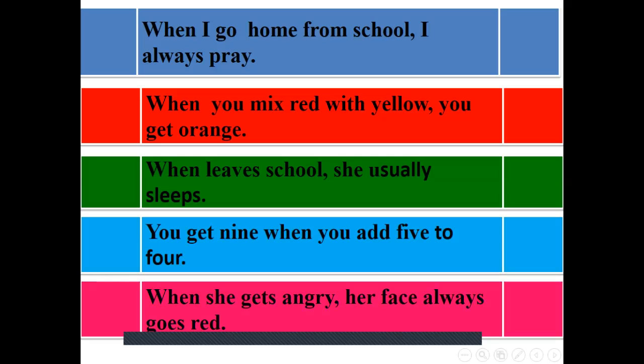When she gets angry, her face always goes red. This happens all the time. Always, when she gets angry, her face always goes red. Notice that when we have 'she', we add S because 'she' takes S with the verb. But when we have I, you, we, they, we use a verb without S. When you mix, when I go home. Notice that we can use 'when' at the beginning of the sentence or in the middle of the sentence. We can always use it in the middle of the sentence. In case we use it in the middle, we do not use a comma. These are the basics. Let's see the examples in the book.